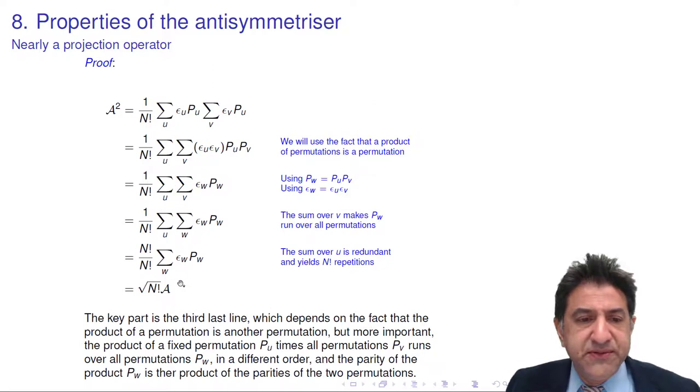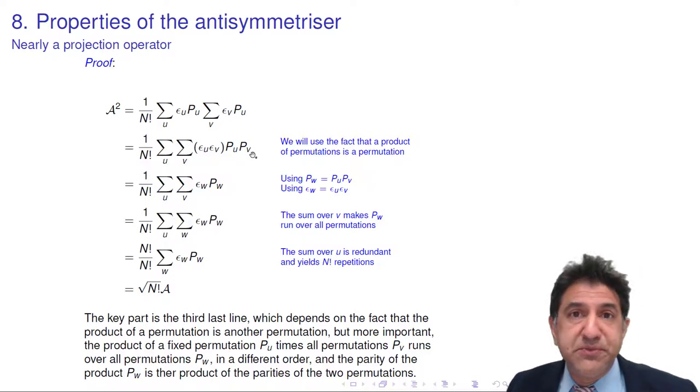The key part of this proof is the third last line, where if you do one permutation times a list of all other permutations, we run over all those permutations. That's the key part of the argument and you have to think about that.